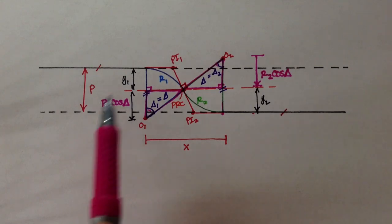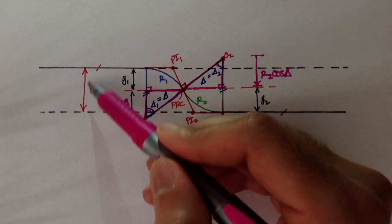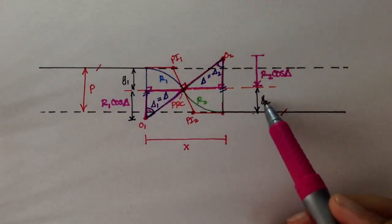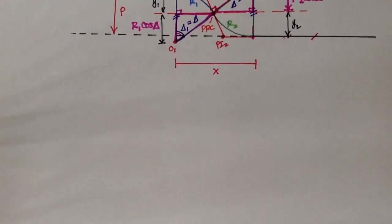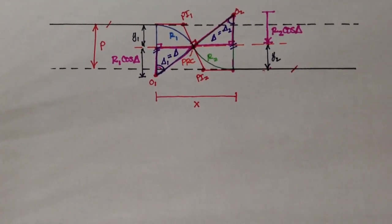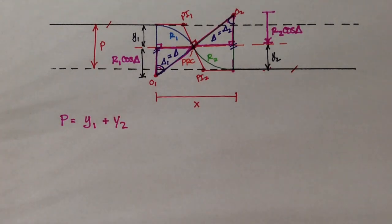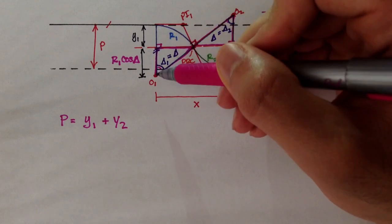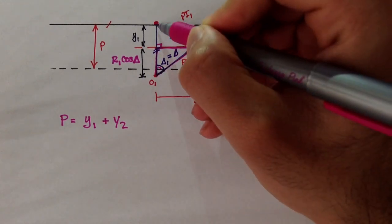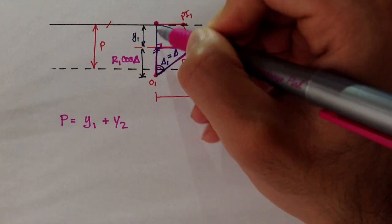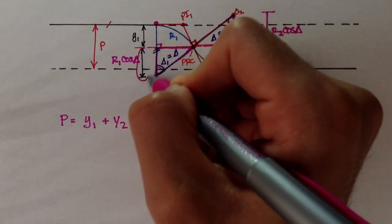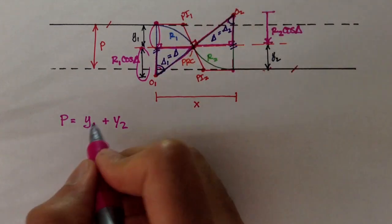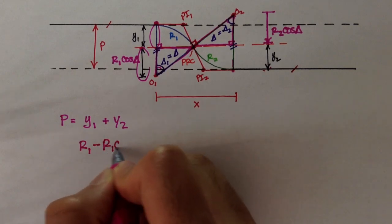P is the perpendicular distance between the two roads and equals Y1 plus Y2. Y1 is the distance from road 1 to the orange dashed line. The distance from BC1 to origin 1 is R1, so Y1 equals R1 minus R1 cosine delta, which gives us the perpendicular offset for curve 1.